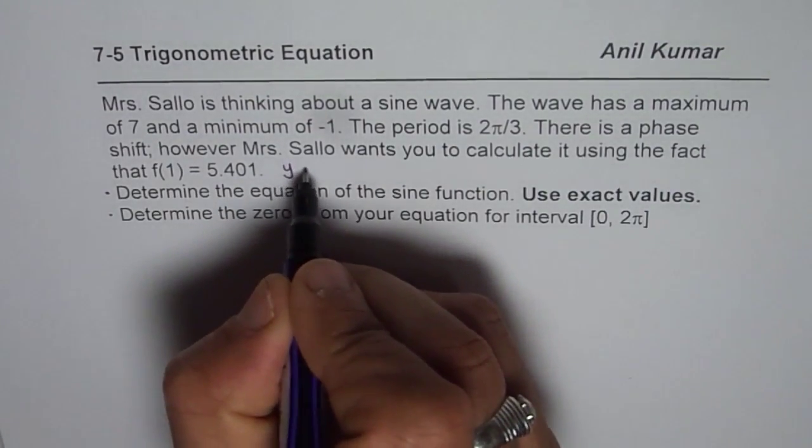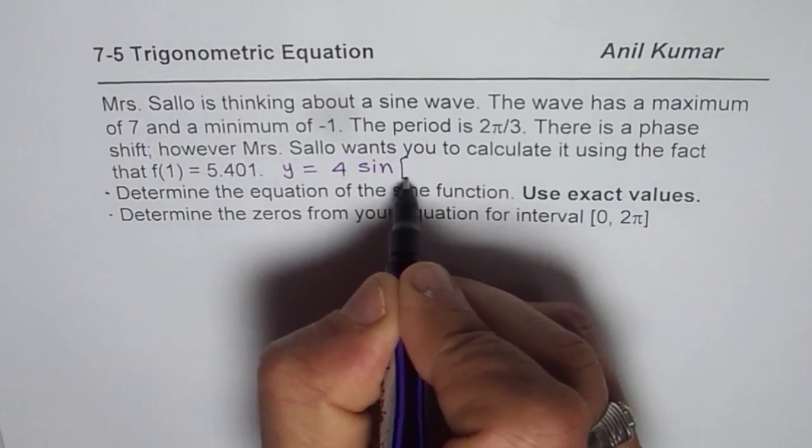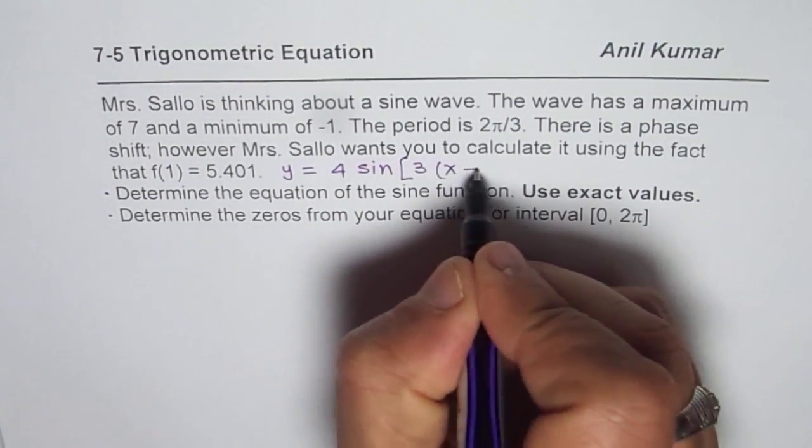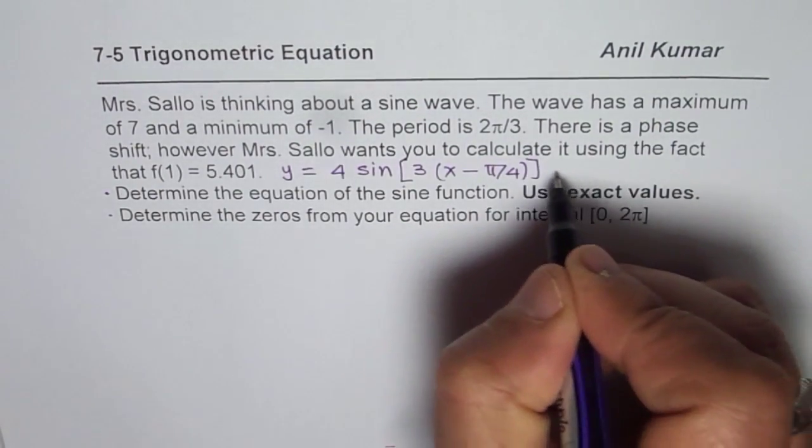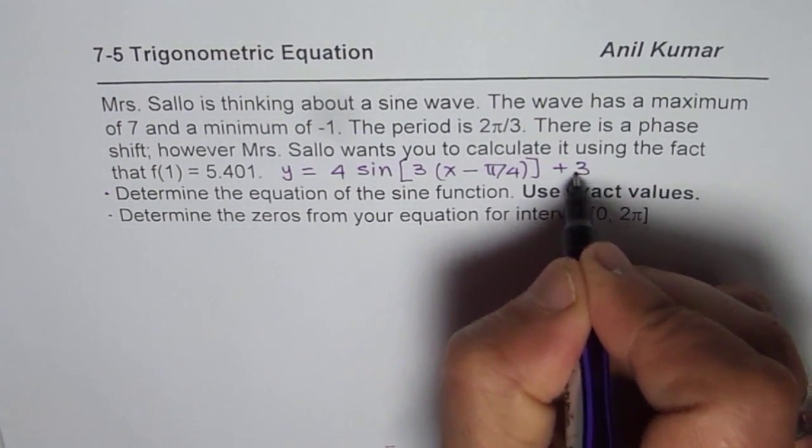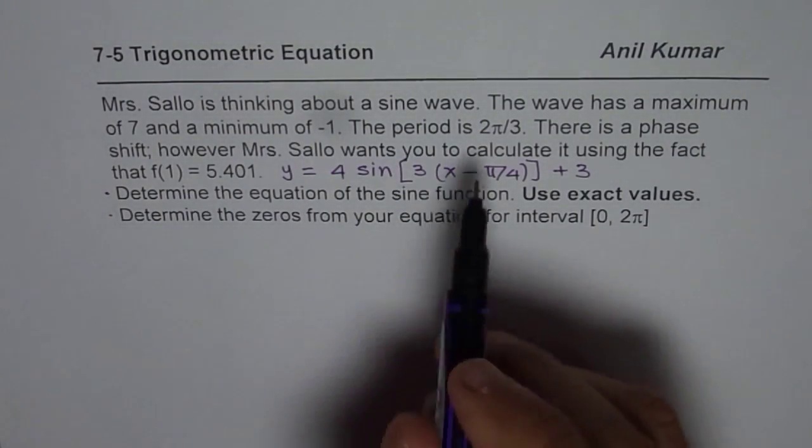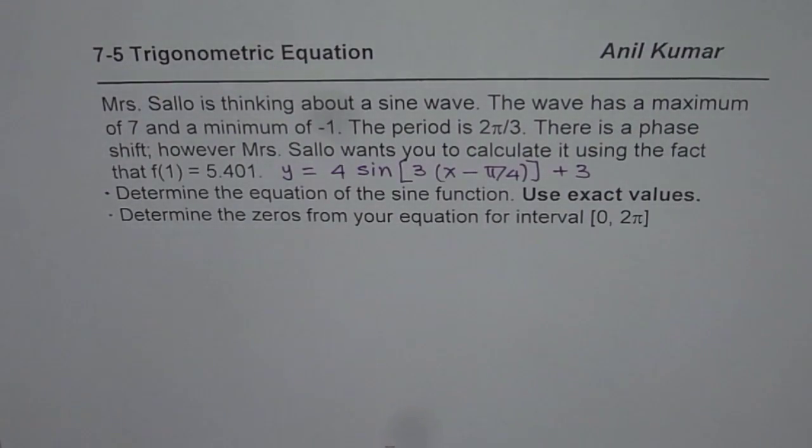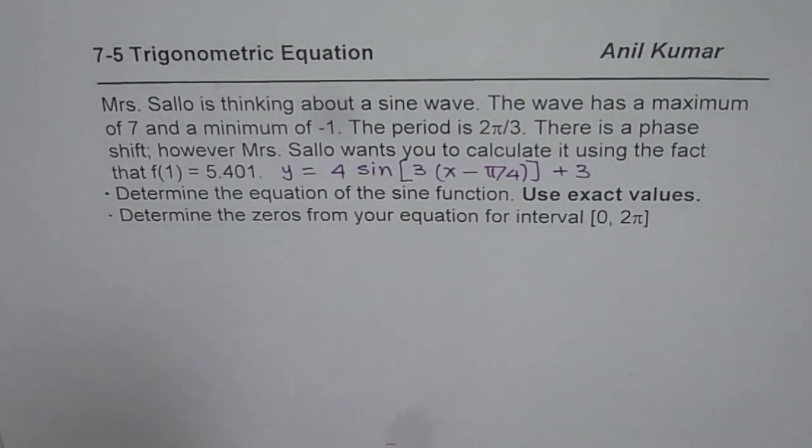So the equation was y = 4sin[3(x - π/4)] + 3. So that is the equation which we found for the given maximum, minimum, and time period and the phase shift from the value at 1. So when x equals 1, y is 5.401. We got this equation.